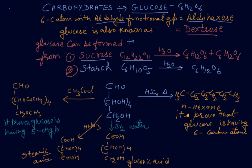When glucose reacts with hydrogen iodide and is heated, we get normal hexane. The formation of normal hexane from the reaction of HI with glucose proves that glucose has six carbon atoms. If the exam asks you to prove that there are six carbon atoms in glucose, write down this reaction. Next, if the question asks to prove that glucose has five OH groups, you react it with ethanoic anhydride.